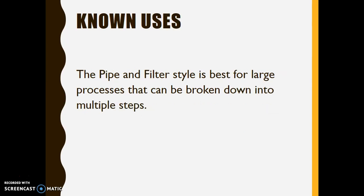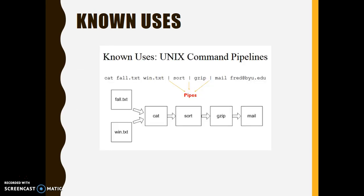The pipes and filter style is best for large processes that can be broken down into multiple steps. For example, we have the Unix operating system, which uses the architecture for its command pipelines. So this is an example: you have different inputs coming from different sources, so it passes through these different filters, and then it ends with this one.